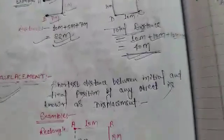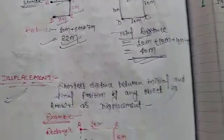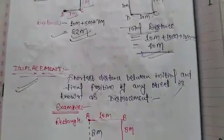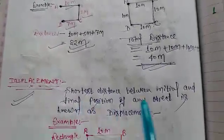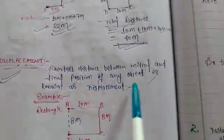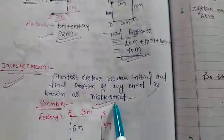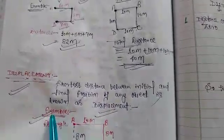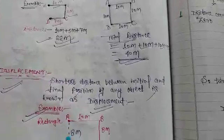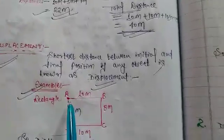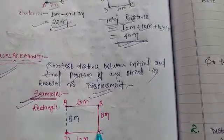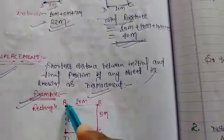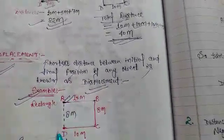Now in the case of displacement, there is a slight difference according to direction. The definition of displacement: the shortest distance between the initial and final position of any object is known as displacement. Suppose an object travels from A to B, B to C, C to D. The initial position is at A and the final position is at D.